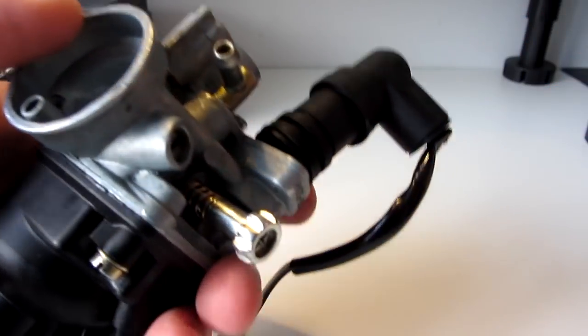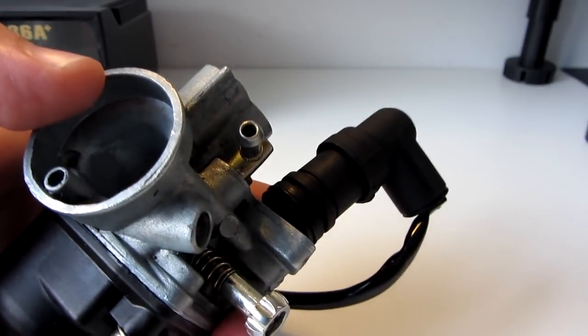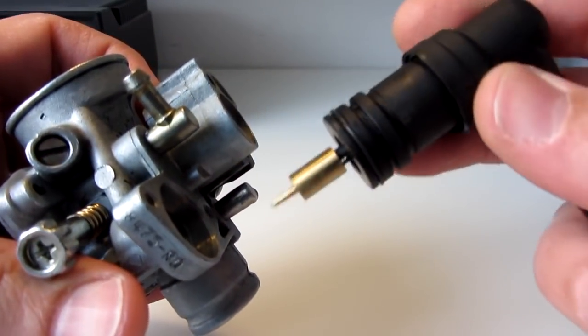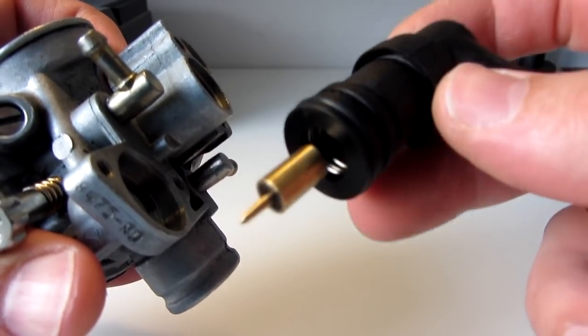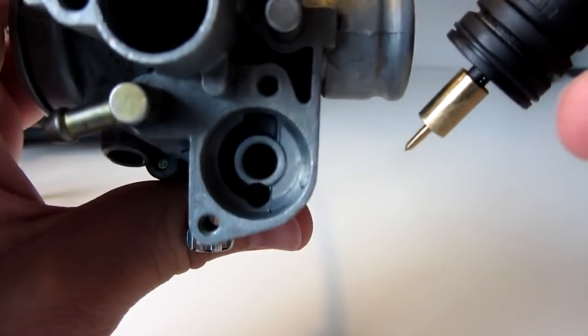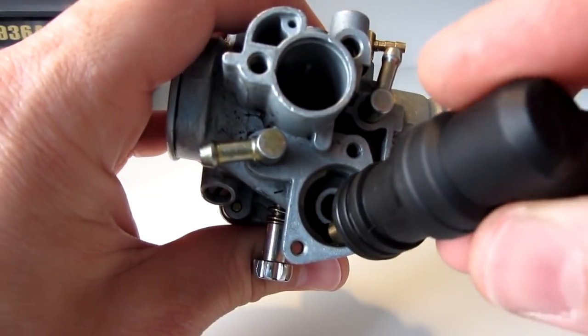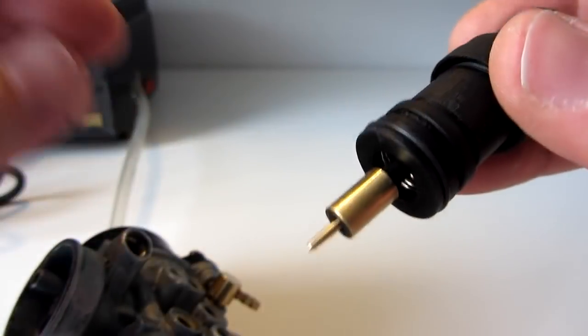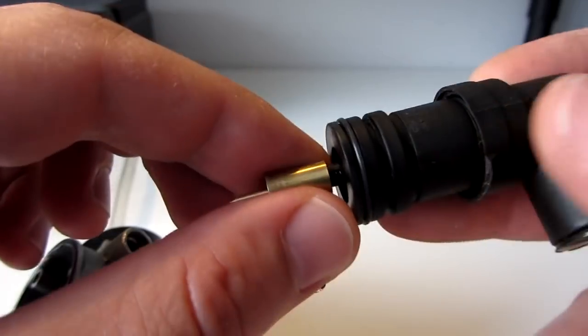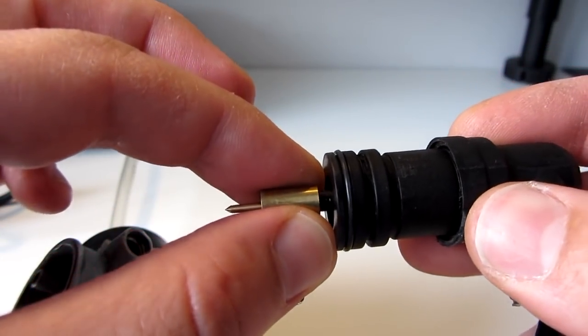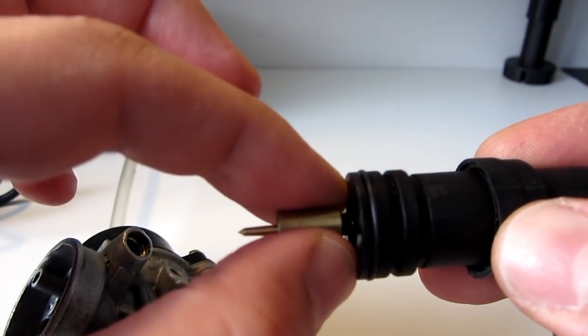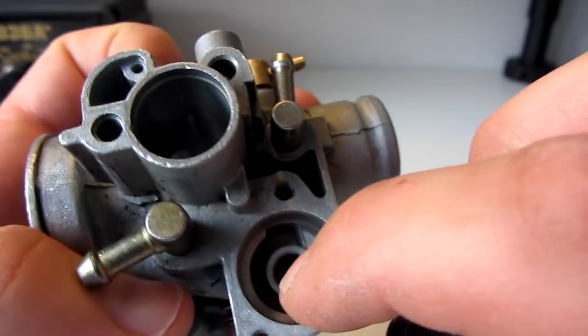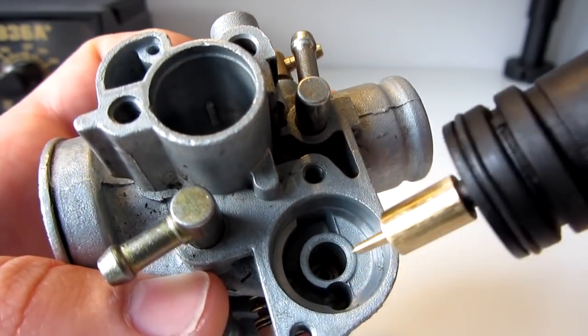So this is my Delorto carburetor and this is the automatic choke. It works by heating, and when it heats, this pin protrudes and it blocks the additional flow of fuel.